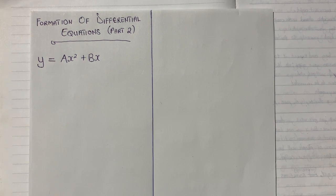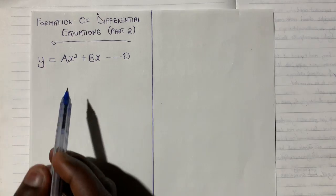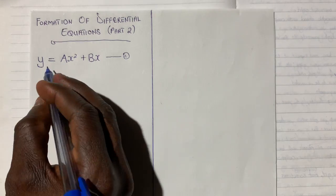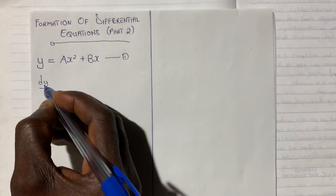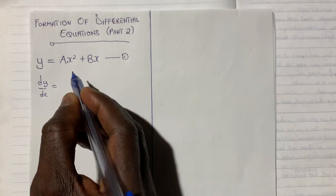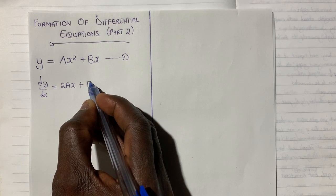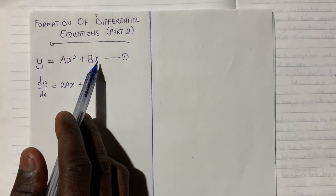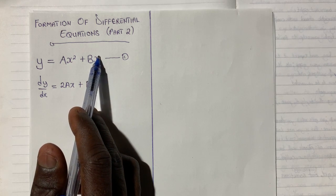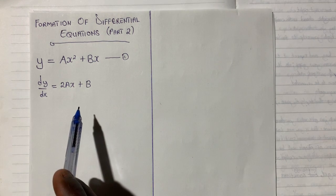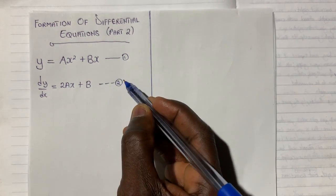I will name the original function Equation 1. Then I differentiate: dy/dx gives me 2ax plus b. Differentiating ax² gives 2ax, and differentiating bx gives b (since the power drops to 0, leaving 1 times b). I will name this Equation 2.